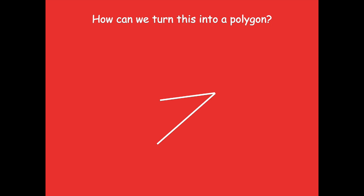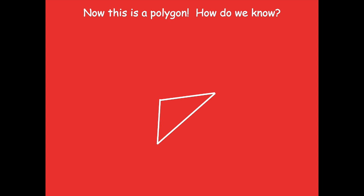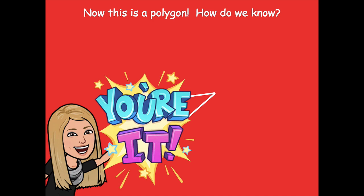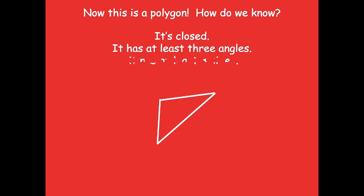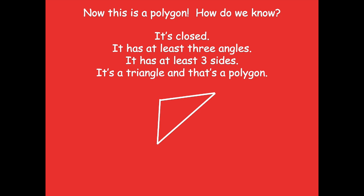How can we turn this into a polygon? We can add another side, just like we did in the last one — so we can add another side right there. Now this is a polygon. Pause the video and think about how you know that this is a polygon. So it's closed — there are no openings. It has at least three angles and at least three sides. And it's a triangle, and that's a polygon.